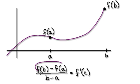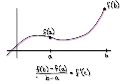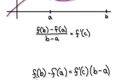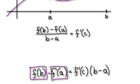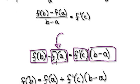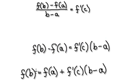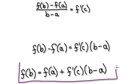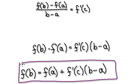What you've got here is this thing divided by this thing. If you times both sides by B minus A, that will give you F(B) minus F(A) equals F'(C) times (B minus A). So now add the F(A) block to both sides, and that will give you F(B) equals F(A) plus F'(C) times (B minus A). From this, we can deduce something about a graph.